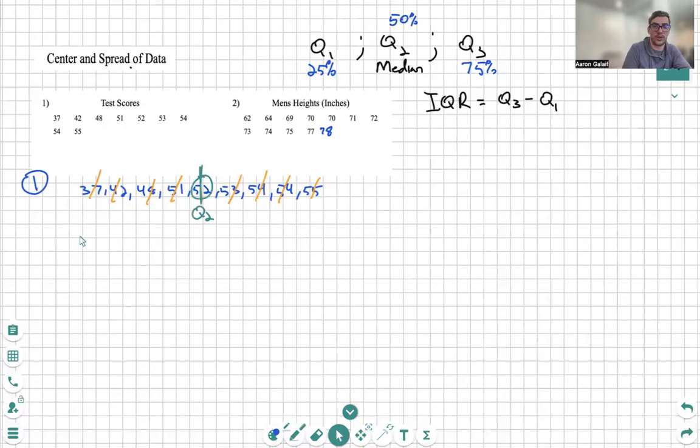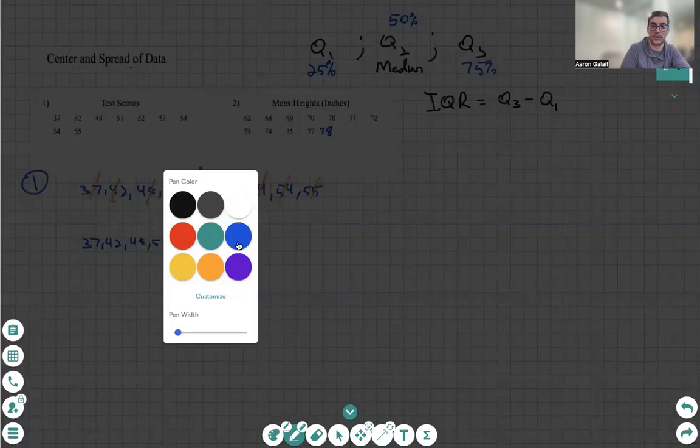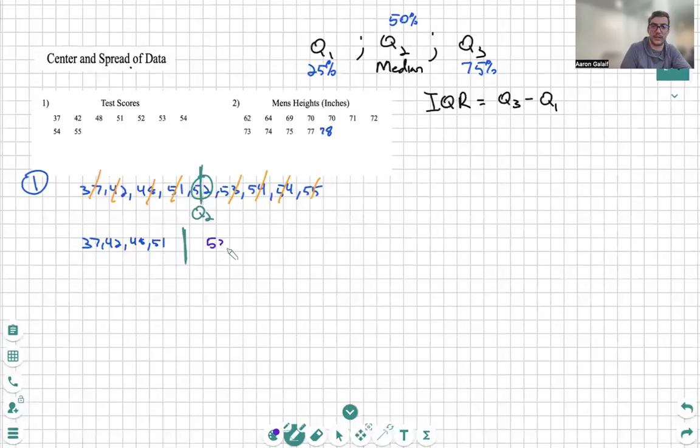So we know that this value is our median or our Q2. Now in order to find the Q1 and Q3, all I'm going to do is take that data and cut it off at the Q2. I'm going to find the median for those two different values, for the ones on the left side of the Q2 or the median, and the right side of the Q2 or the median.